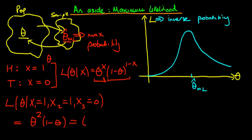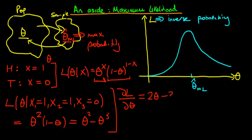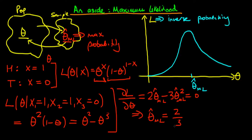So we get theta squared times one minus theta as our overall likelihood, which multiplies out to theta squared minus theta cubed. Differentiating with respect to theta gives us two theta minus three theta squared. Setting that equal to zero defines our maximum likelihood estimate of theta. Solving this, we get theta-hat MLE equals two thirds, which makes intuitive sense because that's simply the proportion of heads out of our three throws.